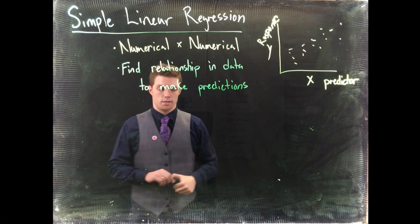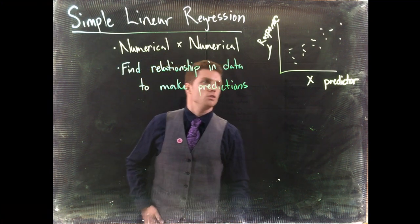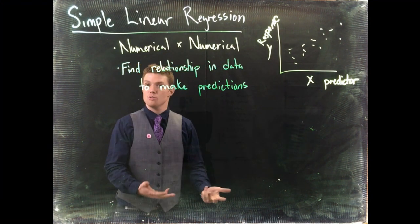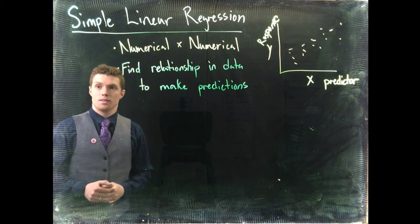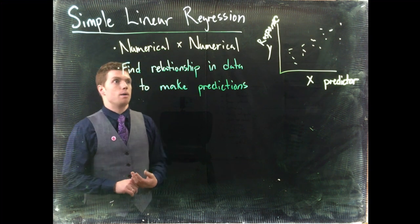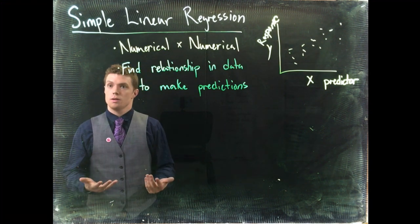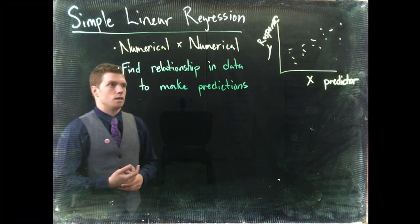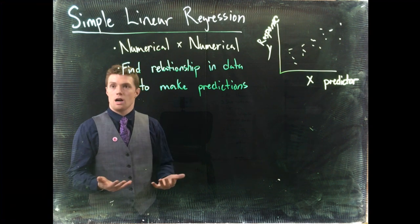Now, we do this all the time. So X is usually something that is easy to measure, and Y is something that we're actually interested in, but it's sometimes hard to measure. So, for example, when we go to the doctor's office,